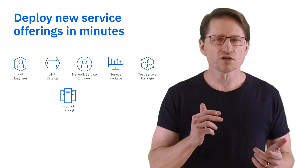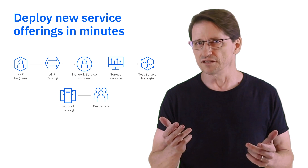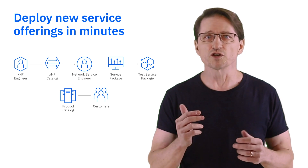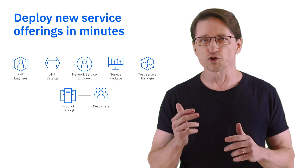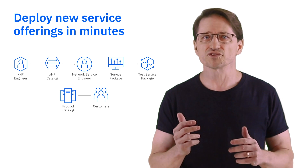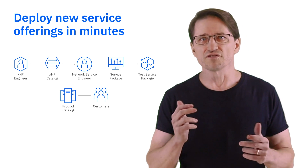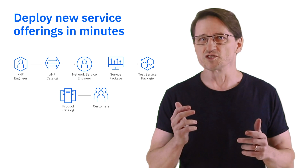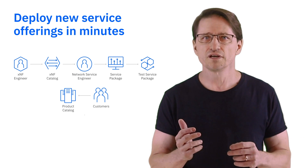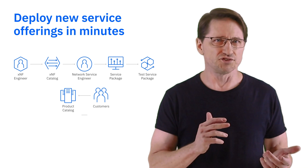With the services available in the catalog, your customers can order them as needed. For example, a mobile virtual network operator could quickly order a virtual radio access network, or VRAN, service. Or an enterprise could order a 5G network slice service from a specific time and purpose.